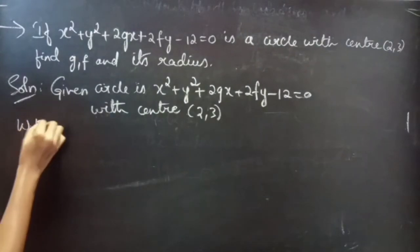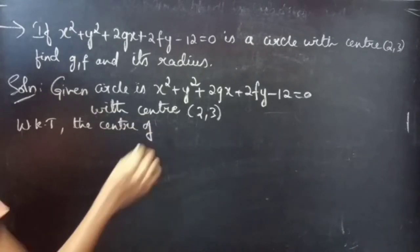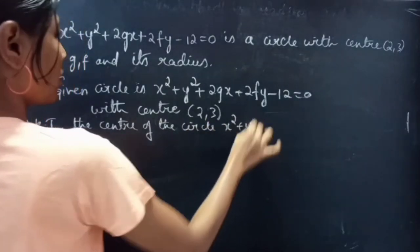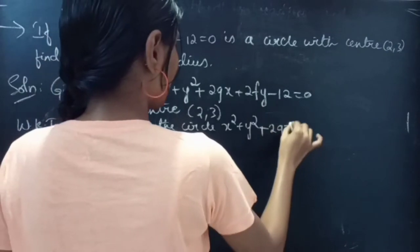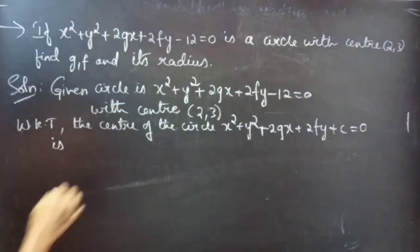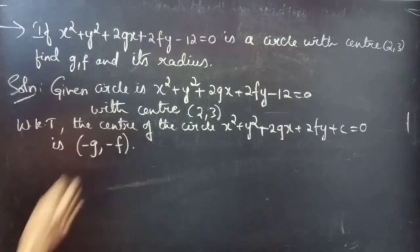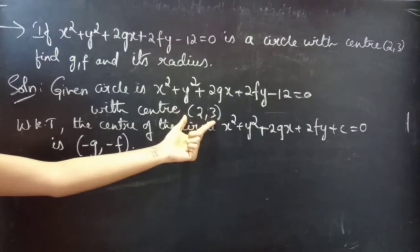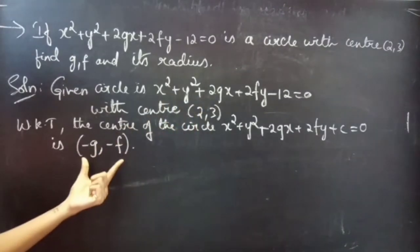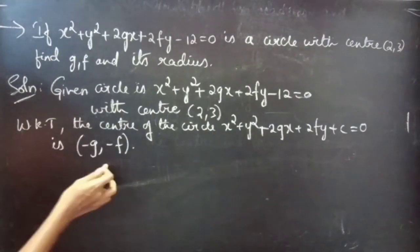We know that the center of the circle x squared plus y squared plus 2gx plus 2fy plus c equals to 0 is minus g comma minus f. Already we are given the center ordered pair (2, 3). So we can equate these two. This is in standard form and this is the formula for center of a circle in standard form. So now we equate these two.